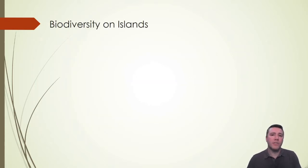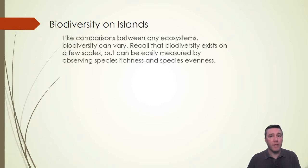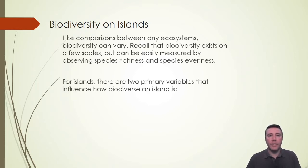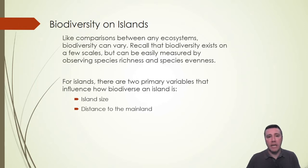Just as the variety of Earth's continental ecosystems varies, so do those on islands. Biodiversity exists on a variety of scales, but it is most easily observed and measured by looking at species richness and species evenness. There are a number of factors that influence the level of biodiversity on an island, but the two primary variables we're going to explore in more detail are the size of the island and the distance the island is from the mainland.